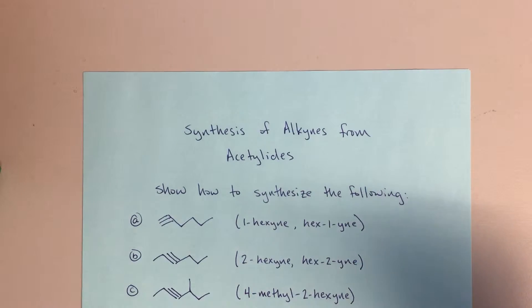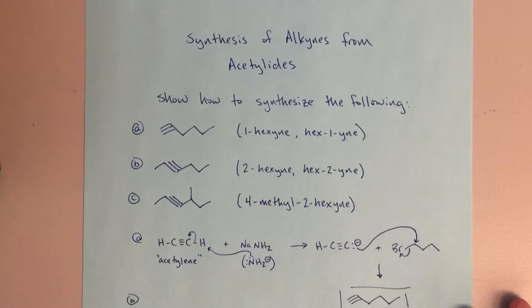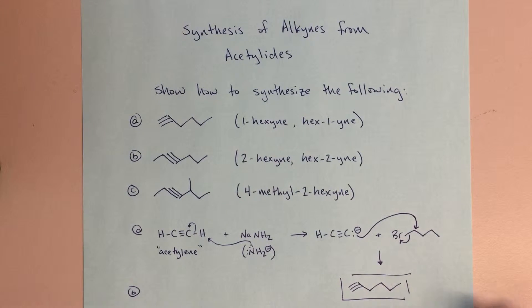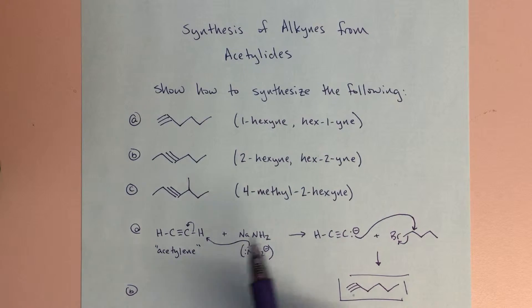For the first one, part A, I went ahead and wrote this one out for us already. Here I've got my acetylene—this is acetylene, the simplest alkyne. Acetylene is its common name; we might also call this ethyne. Here's my sodium amide, so I've got sodium and NH2. That's really just a source of this NH2 minus, that really strong base. That really strong base can abstract that proton pretty much no problem. It's going to do this reaction quantitatively, to 100% completion.